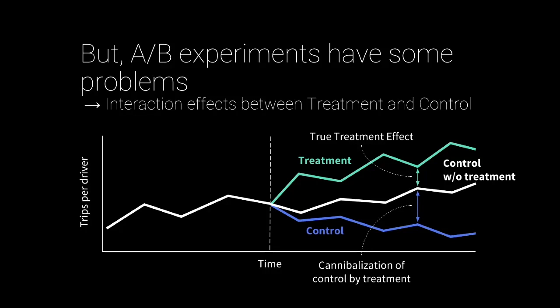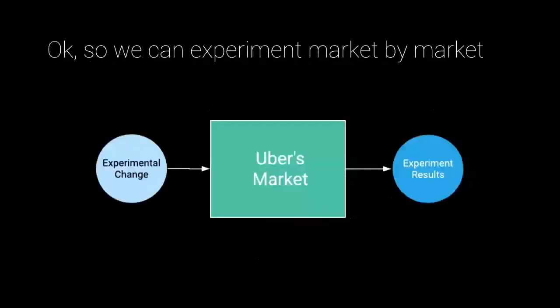We ran into this problem and thought: how do we solve this? A simple solution is to experiment one metric at a time, one market at a time. You take an experimental change, take this complex thing which is Uber's market, and try to figure out and infer what the impact of that experimental change is on the market.